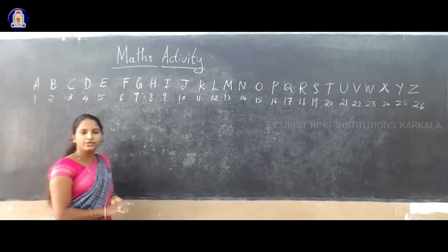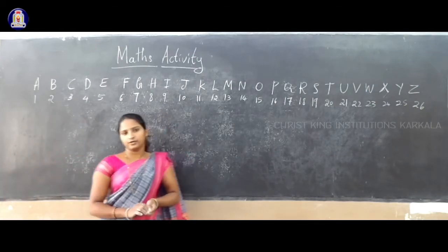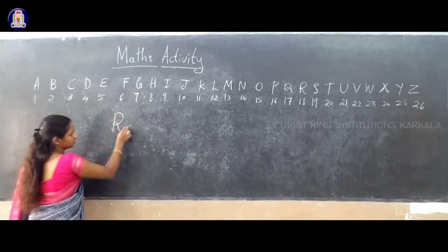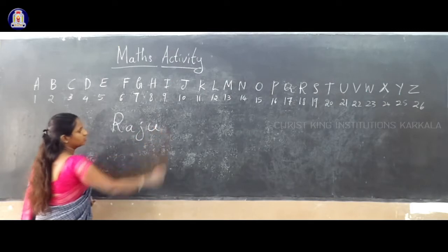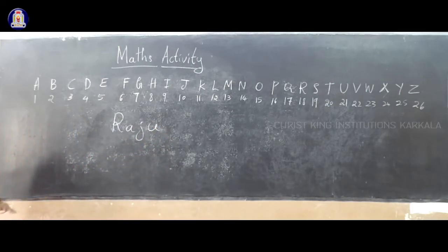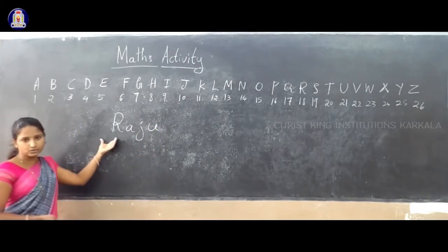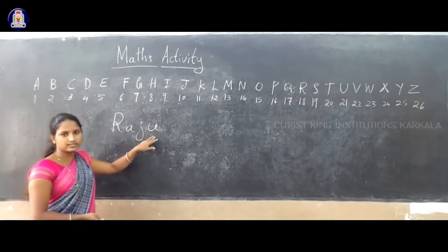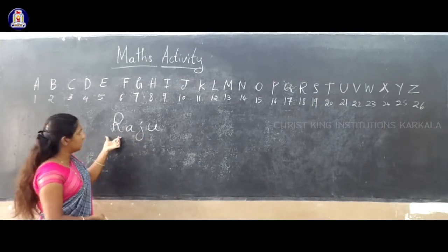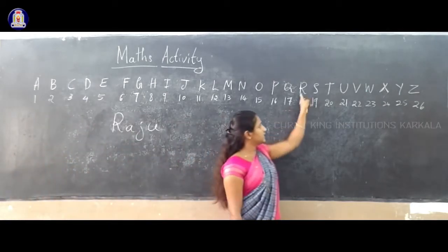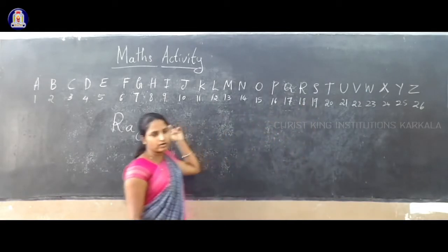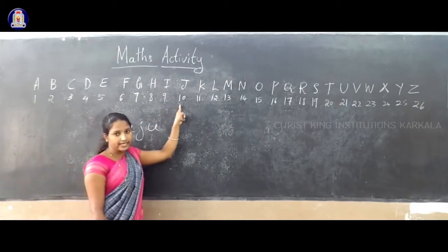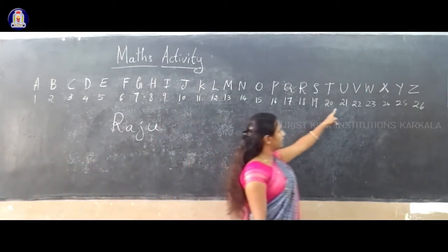Now, first you have to consider a name — you can take any name. For example, I take the name Raju. So Raju: R, A, J, U. R means what number? R is 18. And A is 1. J is 10. U is 21.